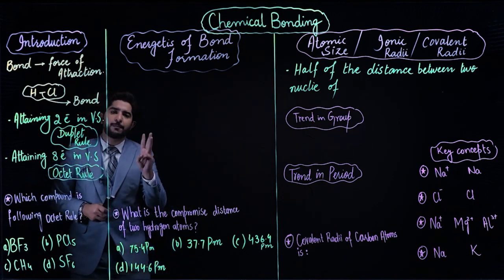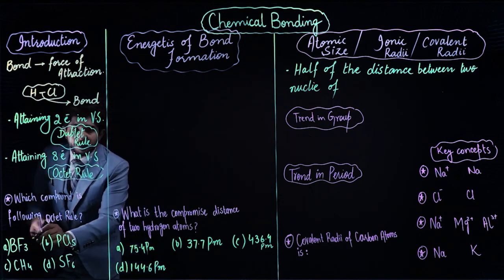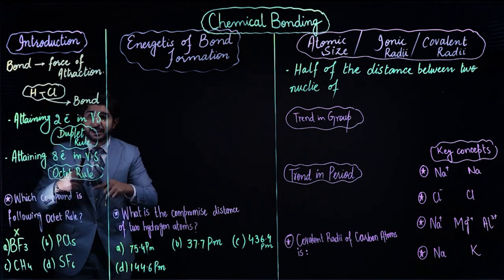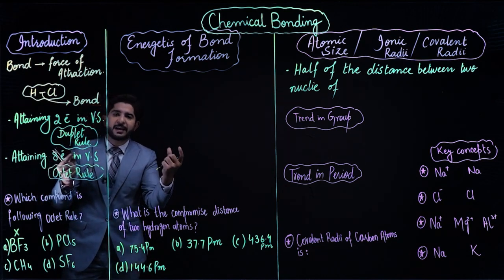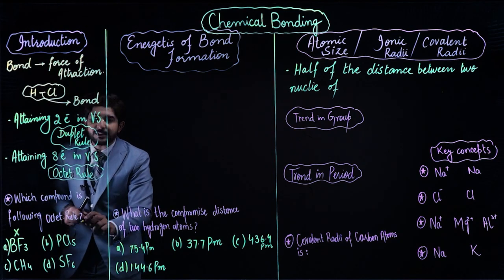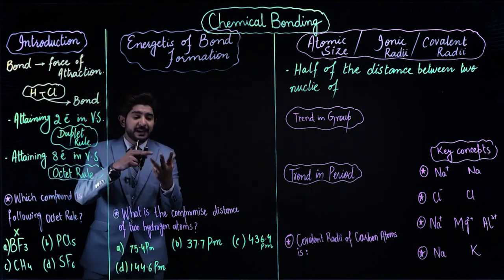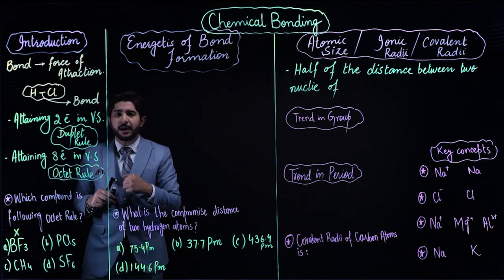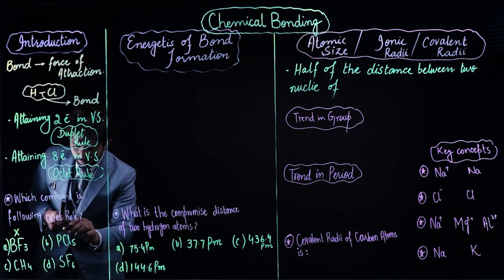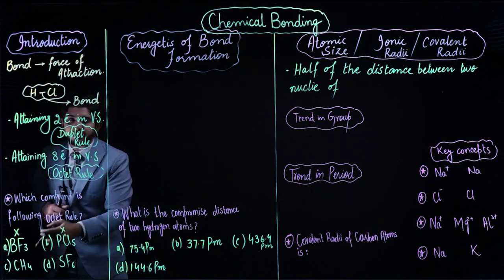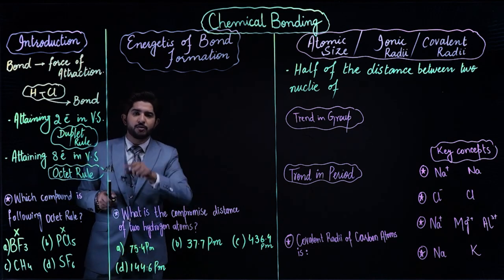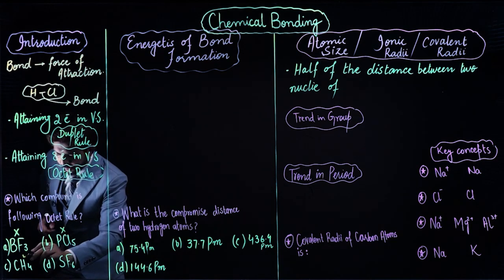BF3: boron belongs to group three, and three fluorines share one electron each, giving a total of six electrons in sharing — so BF3 does not follow the octet rule. PCl5: phosphorus belongs to group five, it needs three electrons, but five chlorine atoms attach, so the octet rule is not followed. CH4: carbon belongs to group four, four hydrogens each share one electron, giving a total of eight electrons — so CH4 follows the octet rule. SF6: sulfur belongs to group six, with six electrons; six fluorines attach, giving twelve electrons in sharing — so the octet rule is not followed. The compound following the octet rule is CH4.